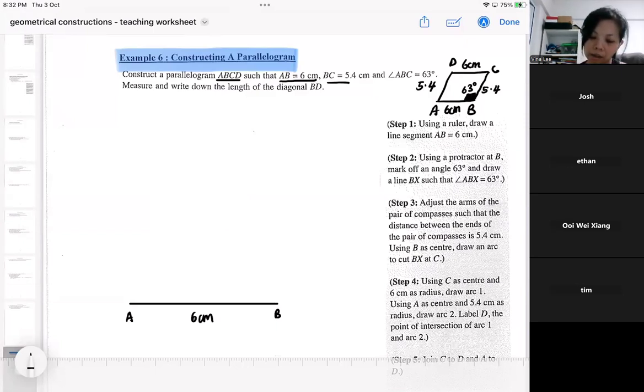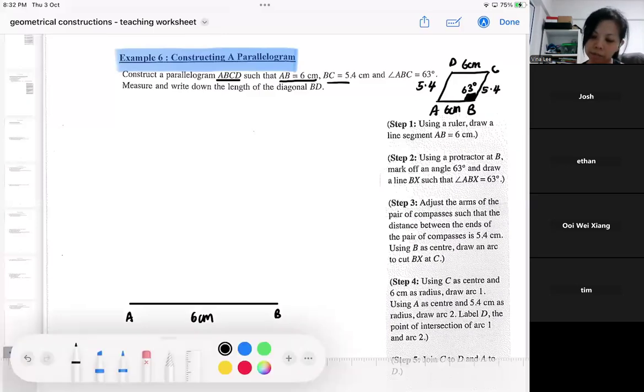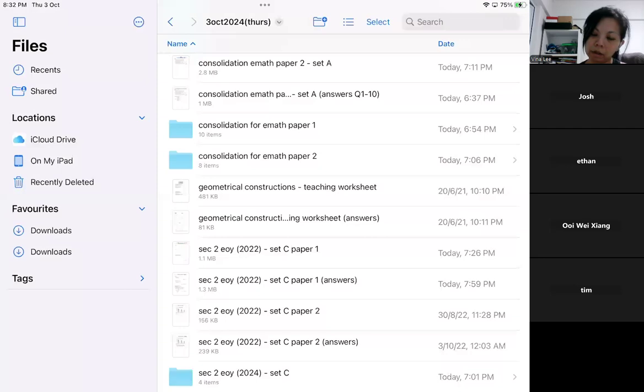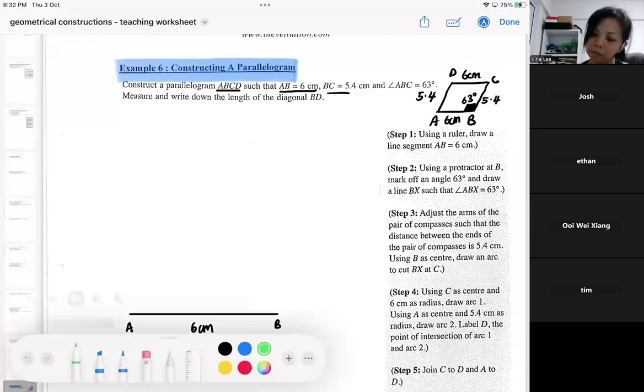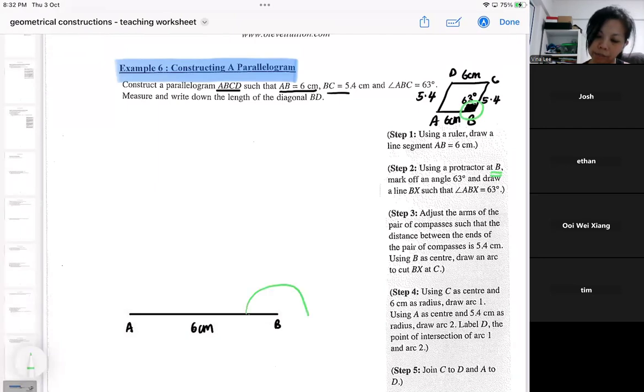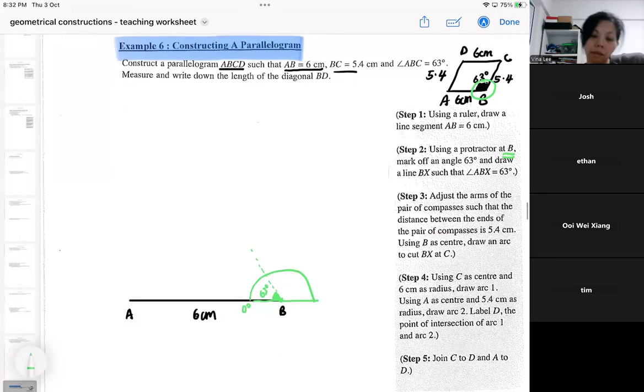Then because the angle is at ABC, your protractor should be put on B because the angle is here. So you put your protractor. 63, you've got to look. I think 63, maybe somewhere like this. Because you can visualize 90 degree. So 63 should be less than that. So you make sure that your protractor, the 0 degree is here. Then you can see that this is 63.